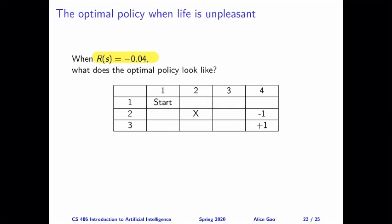Given that, let's look at this case where life is slightly better. The optimal policy for this world is conservative. Because life is slightly better, the cost of each action is not as bad as before, so the agent prefers to take the long way around to avoid reaching the minus-one state by accident. Think about what the optimal policy looks like, and then keep watching for the answer.